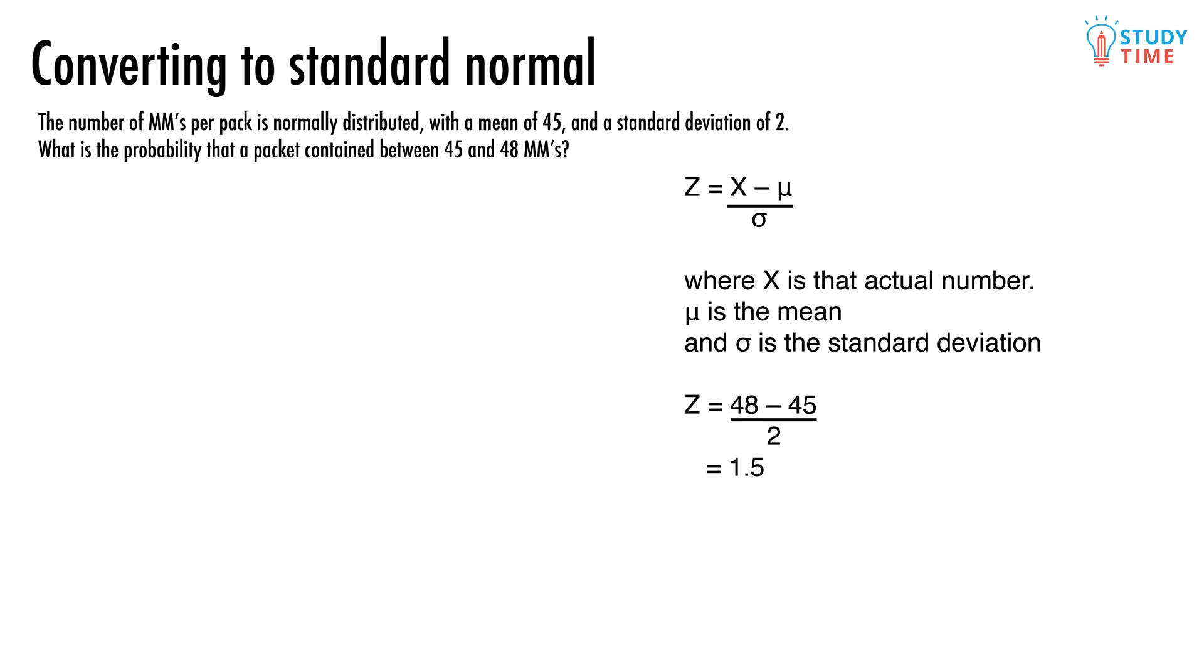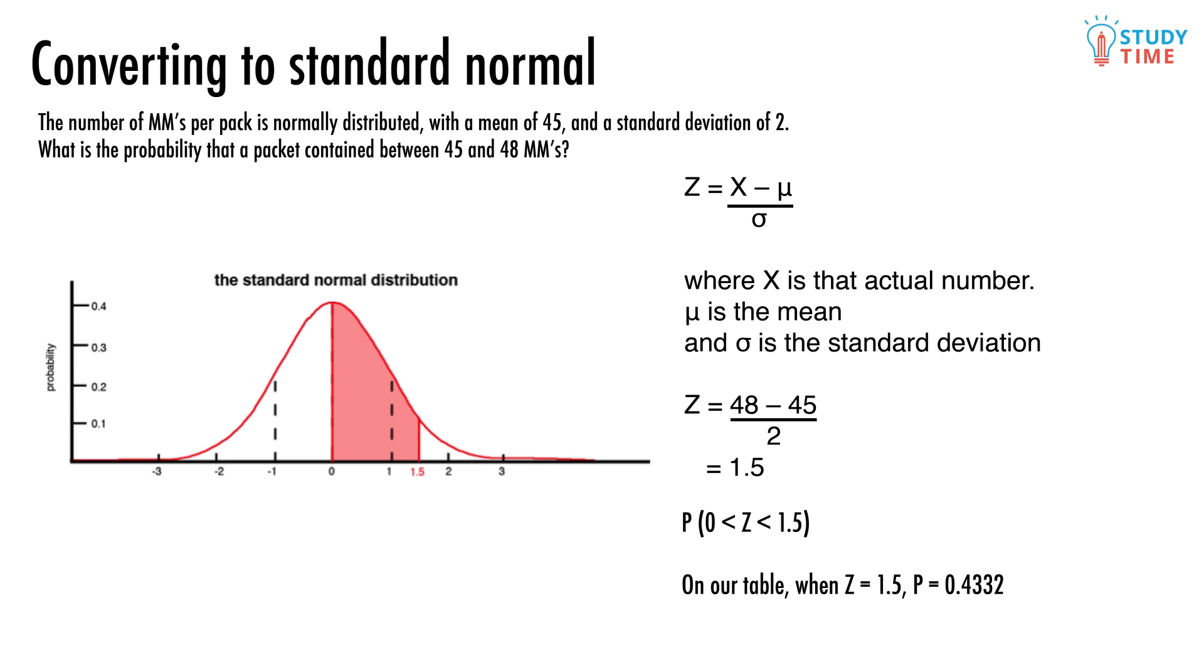So we can now go and change the question to this. Which means that on the standard normal graph, the area we're searching for is actually this area.